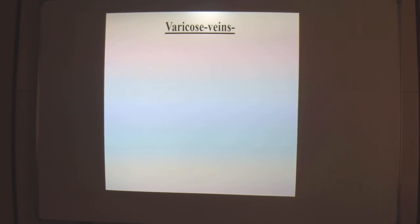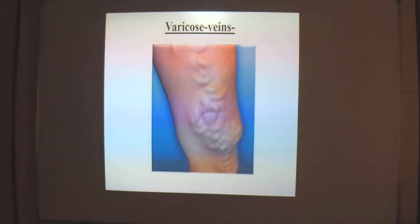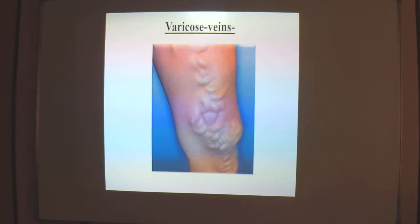Varicose veins commonly affect lower limb veins, and the great saphenous vein is the commonest site for varicosities, due to improper venous drainage of the lower limbs. It produces discomfort in the lower limbs. The GSV, except close to its termination, is situated in the subcutaneous fat and is deprived of the advantage of the muscle pump. This leads to stagnation and varicosities as the vein walls become incompetent due to retrograde blood flow.